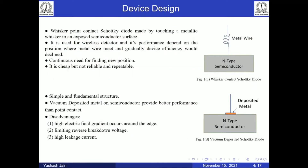Let's start with the device design part. First, in the early 1900s, a practical device was implemented by touching a metallic whisker to an exposed semiconductor surface. It was used as a wireless detector and it is cheap, but it is not reliable because the performance of the device would fall away gradually and we had to find a new contact position.